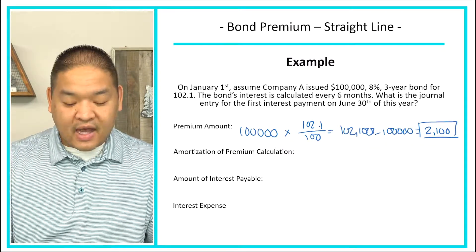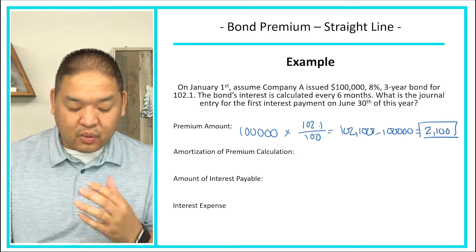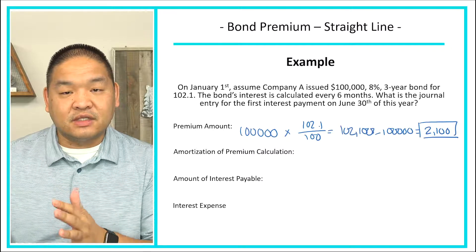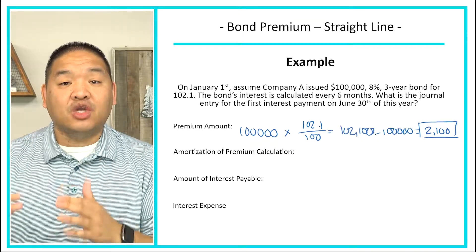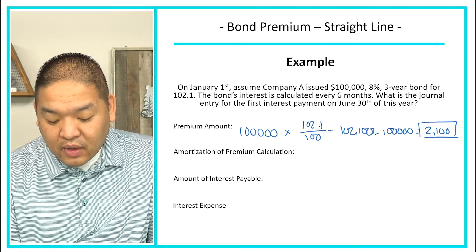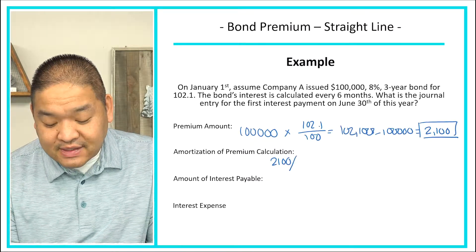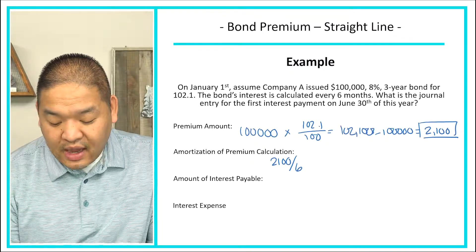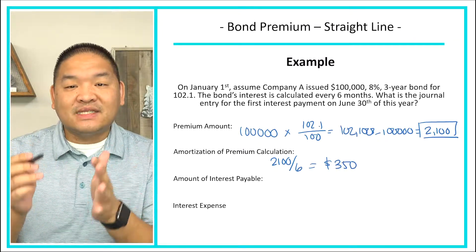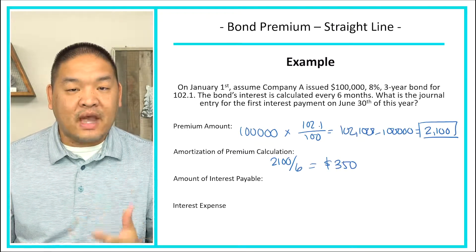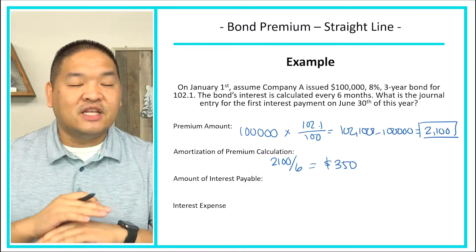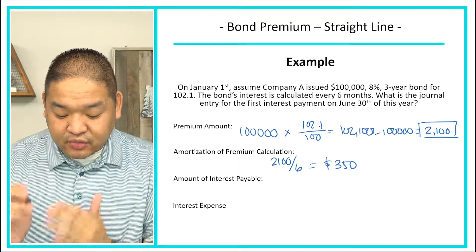Next, we amortize the premium. We've got $2,100 to take care of over six payments. So we take $2,100 divided by six payments over three years and get $350. Every single period, we are going to amortize $350. This is the straight line method — taking the $2,100 and dividing it by six periods gives us $350 per period.